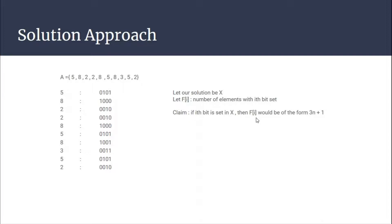So we construct our result from the frequency array. First, we calculate the frequency array. Then at each position i, we check whether f(i) modulo 3 equals 1 or not. If f(i) mod 3 = 1, it indicates the i-th bit is set in the result. We initialize result to zero, and if the i-th bit is set, we increment the result by 2 raised to the power i. This is how we find x.